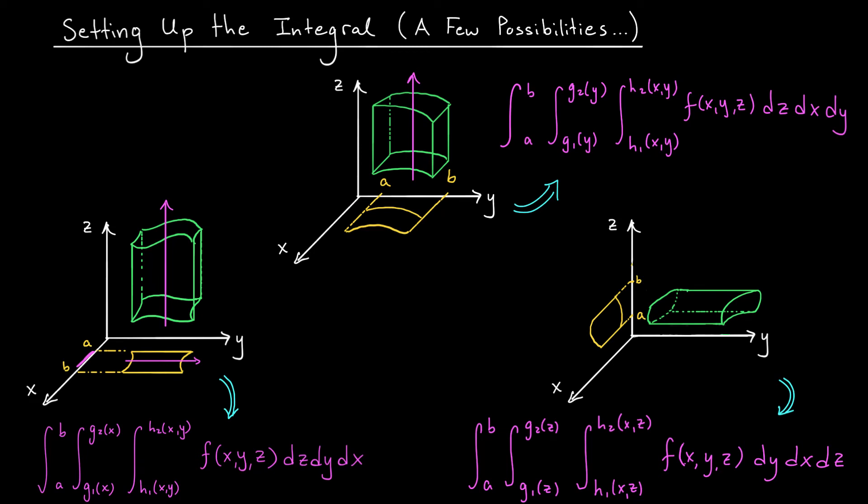x goes between two functions of y, and y goes between two constants. So we would next integrate with respect to x from the left function, g1y, to the right function, g2y. Those are the functions you see here. And we end by integrating y from the constant a to the constant b.